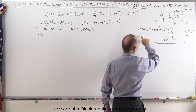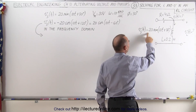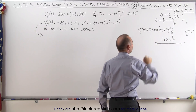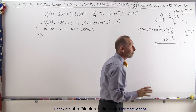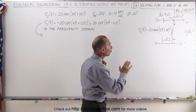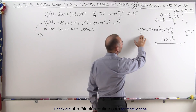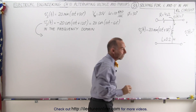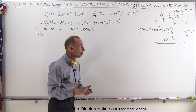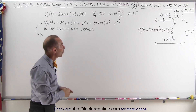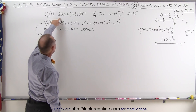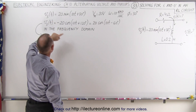Here's our input voltage from the source: 20 times the sine of 10t plus 30 degrees. Notice that in this case the source voltage is in terms of the sine, not the cosine. Since we traditionally work everything with the cosine, we may want to change that into a cosine function.